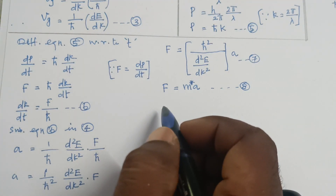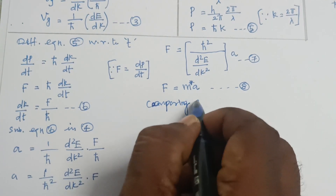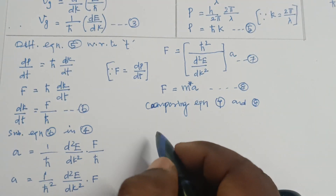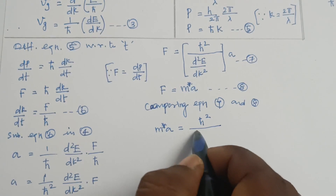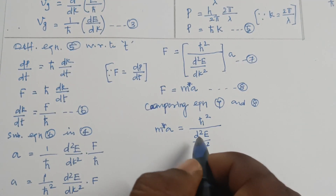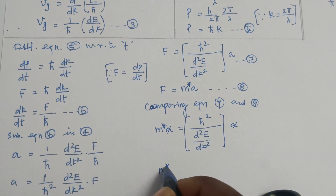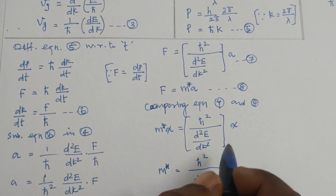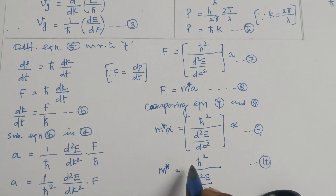Comparing equations 7 and 8: m*a = ℏ²/(d²E/dk²) × a. Cancelling a from both sides, m* = ℏ²/(d²E/dk²). This is equation 9 (also referred to as equation 10), representing the effective mass of an electron.